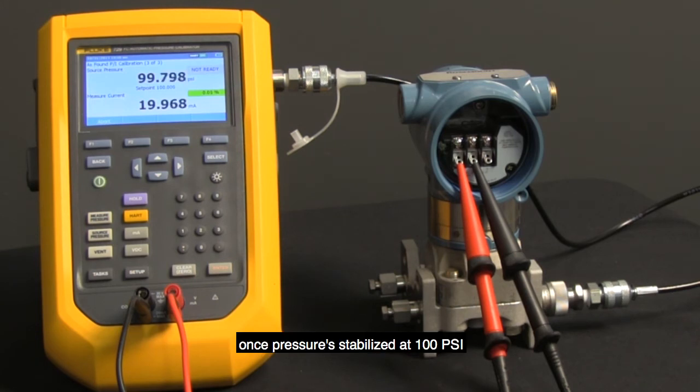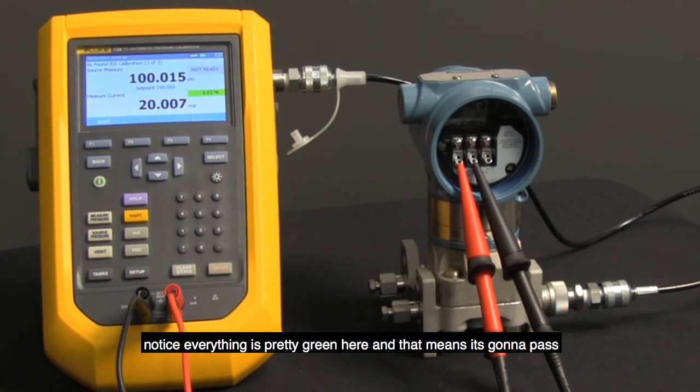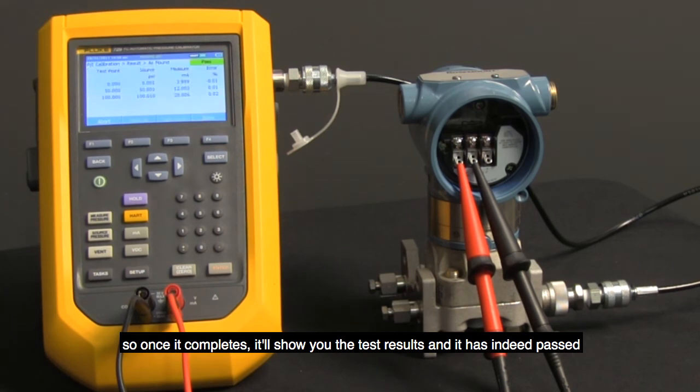Once pressure is stabilized at 100 PSI, the 729 will document the 4-20 output. And you'll notice everything is pretty green here, and that means it's going to pass. So once it completes, it'll show you the test results, and it has indeed passed.